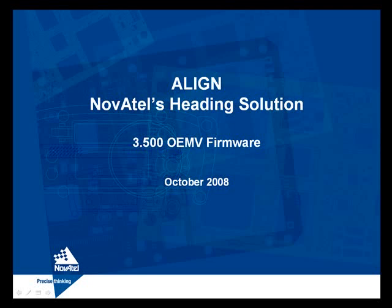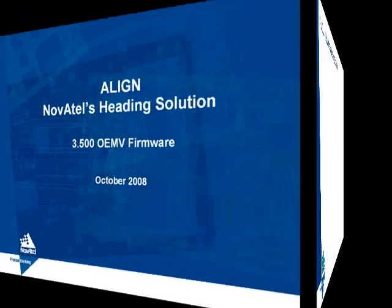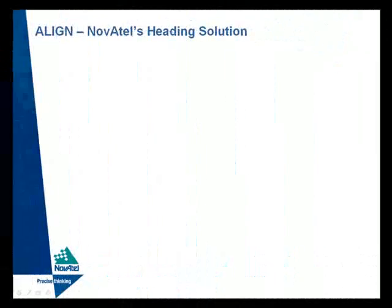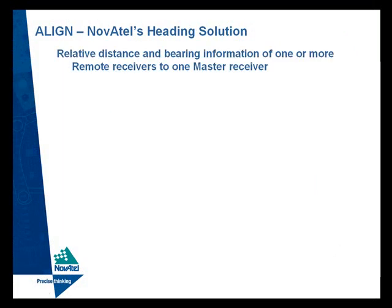Hello and welcome to Novatel's Align product introduction presentation. Align is a new feature available in Novatel firmware 3.500 and features an accurate GPS-based vehicle heading solution based on core Novatel GPS technology. The Align product provides relative distance and bearing information from one or more remote receivers to one master receiver.